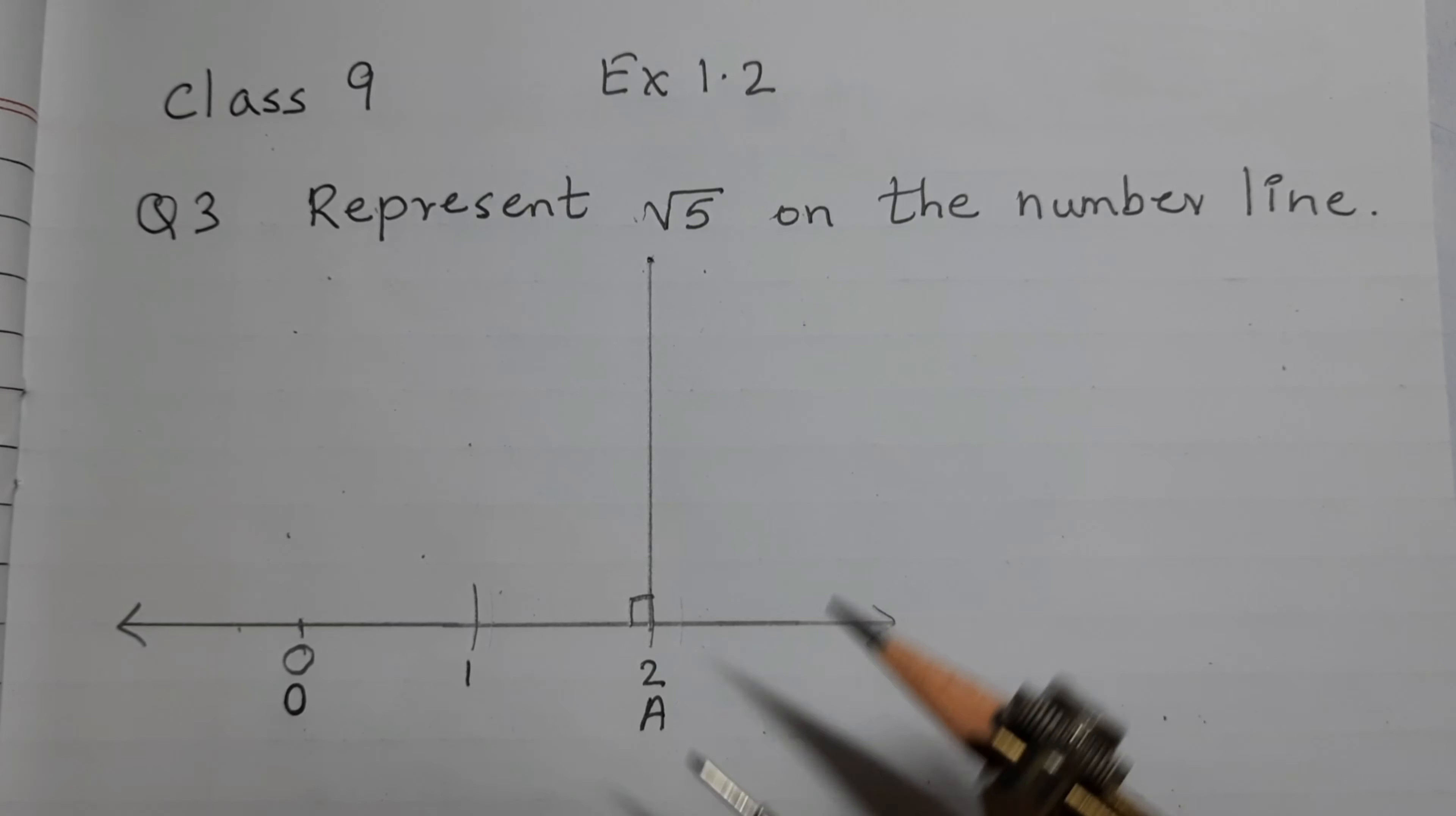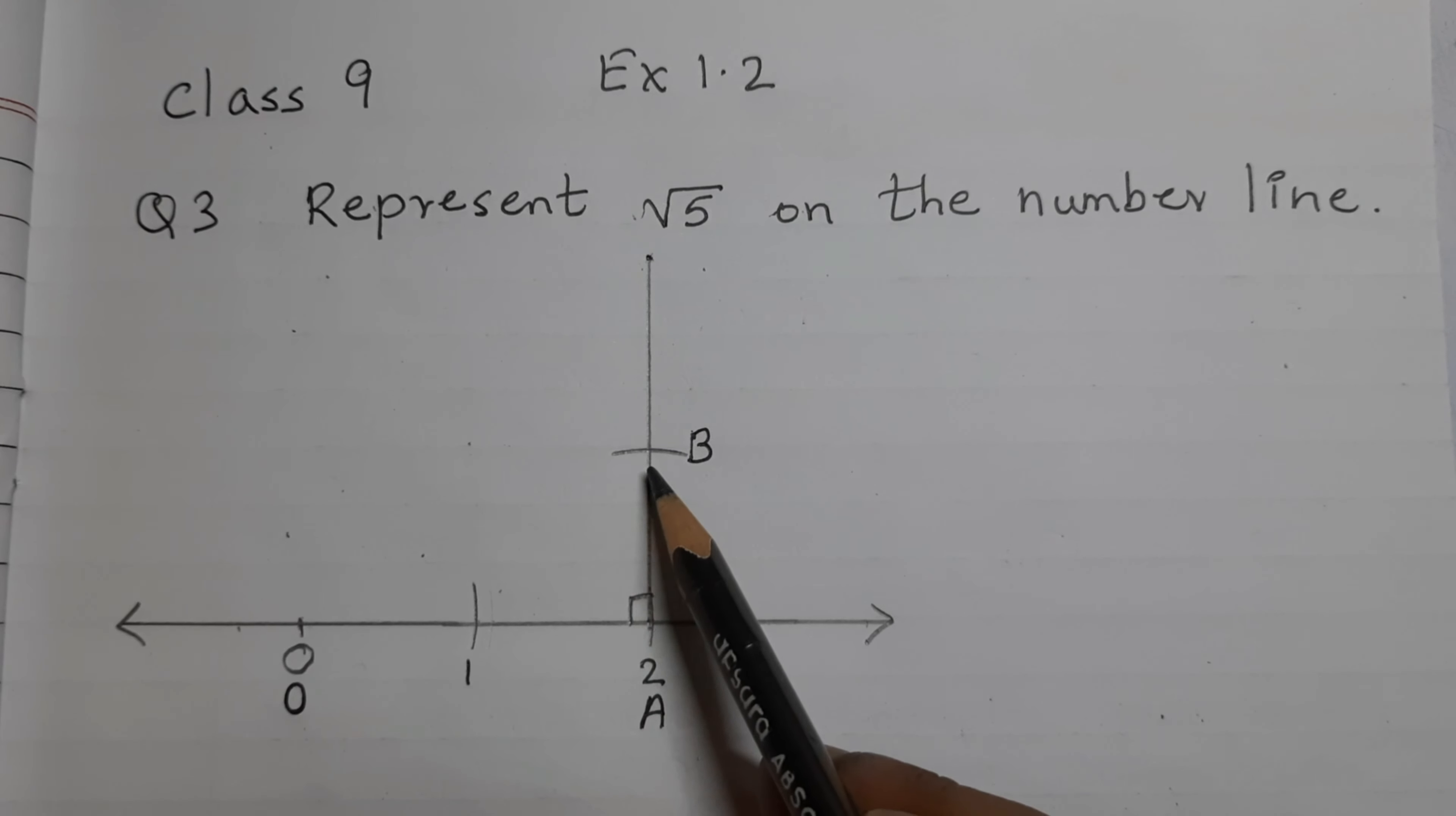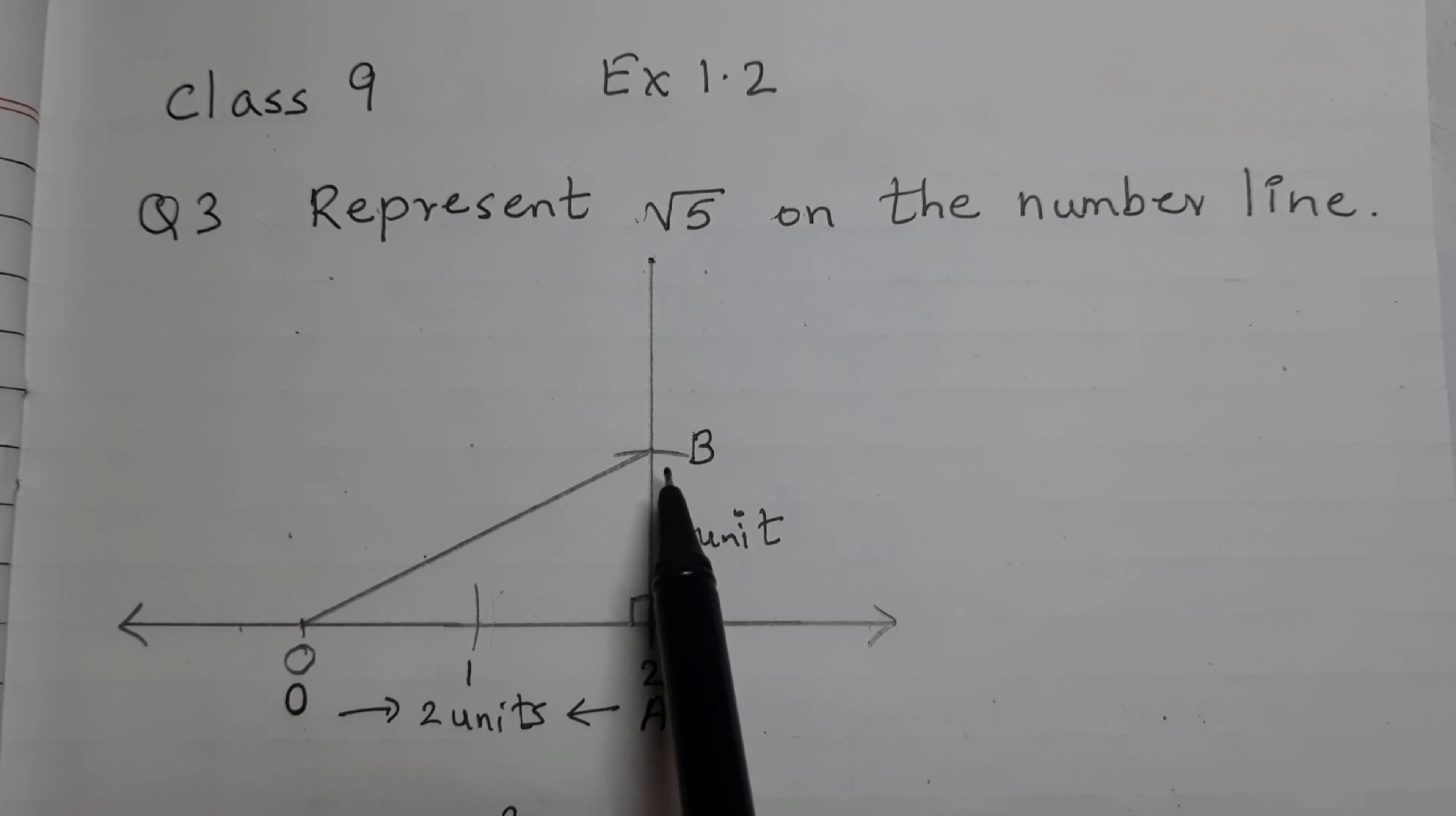Now take your compass and take unit length that is from 0 to 1. Place the metal point at A and cut an arc. Let's say this point is B. Join O, B. So this length is 2 units and this length is 1 unit. O, A, B is a right angle triangle at A.